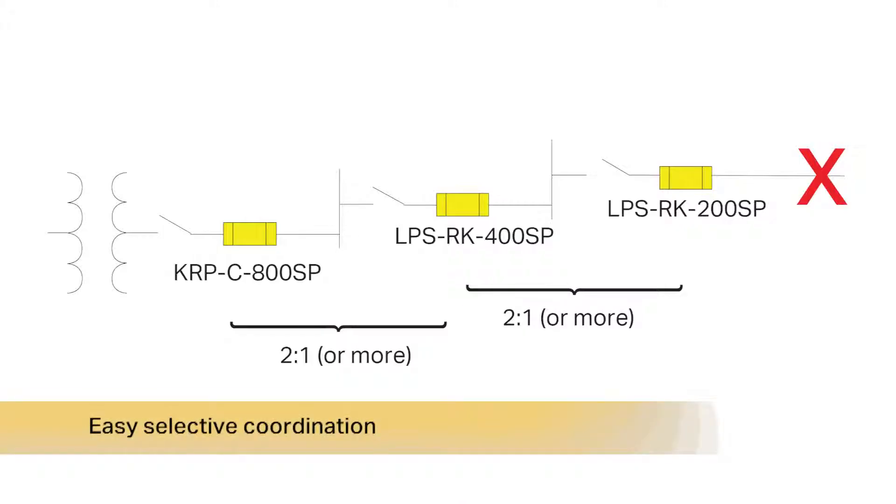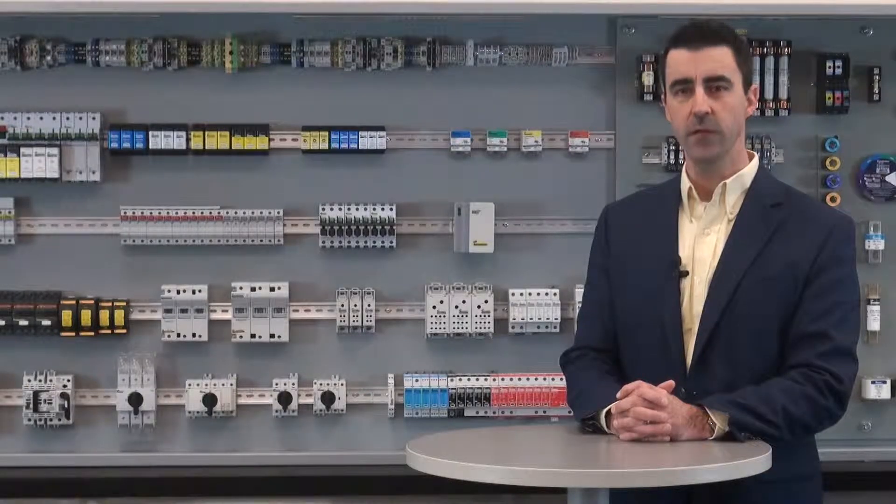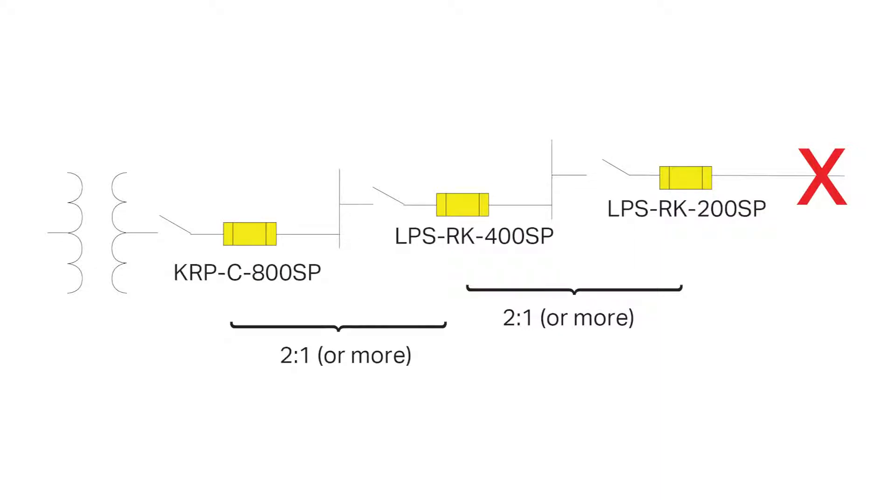Current limitation is a key part of selective coordination, and current limiting fuses save the engineer or designer time and money by reducing the need for a selective coordination study, as long as the minimum amp ratio is maintained between upstream and downstream fuses, such as a 2 to 1 amp rating ratio for Bussmann series low peak fuses. Selective coordination is achieved and unnecessary power loss to upstream circuits is prevented for any fault current up to the interrupting rating of the fuse.